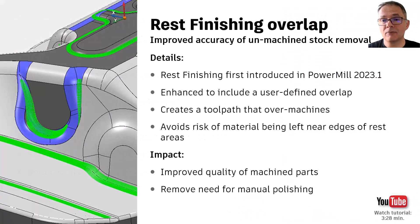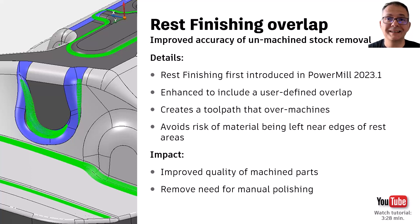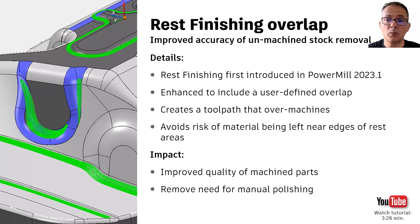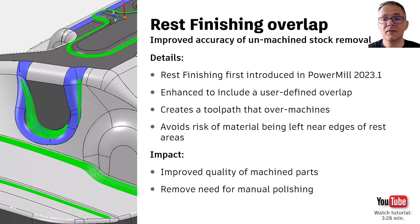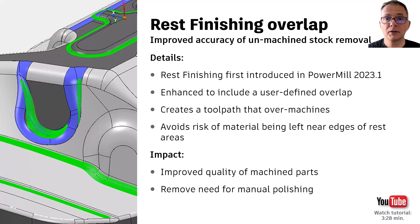Our next update relates to the rest finishing toolpath introduced in PowerMill 2023.1, which combines the accuracy of rest boundaries with the precision and control seen in toolpaths such as corner finishing. PowerMill 2024.0 sees further improvements with the ability to define an overlap value. This causes PowerMill to produce a toolpath that machines slightly more of the rest area, increasing coverage and reducing the likelihood that small regions of material will be left unmachined near the edges of rest areas, improving part quality and reducing the need for manual polishing.